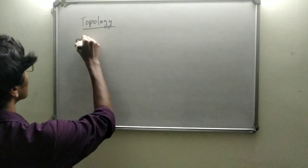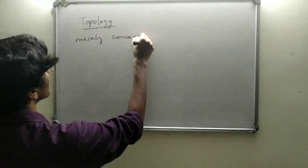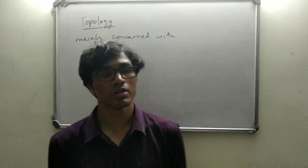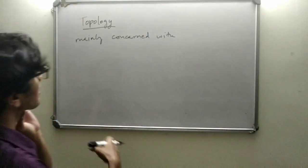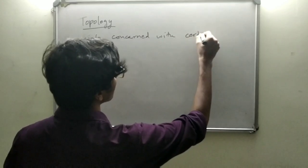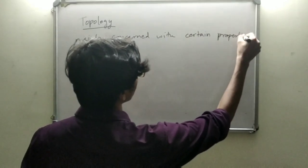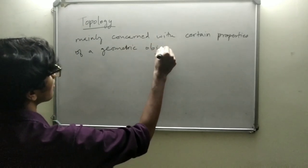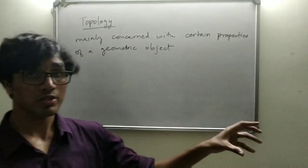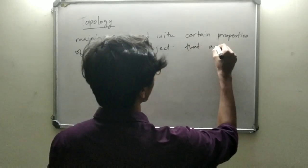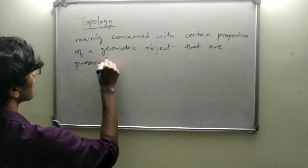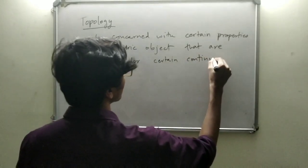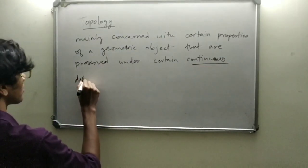Topology is mainly concerned with certain properties of a geometric object — for example like a rectangle, a square, a circle, or even a surface. It's mainly concerned with those properties which are preserved under certain continuous deformations.